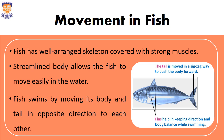What is streamline shape? It is a boat-like shape. If you observe the body of a fish closely, you will see that it is broad at the middle and narrow at the two ends, similar to a boat. This streamlined shape helps the fish cut through the water easily. Fish swim by moving their body and tail in opposite directions to each other.